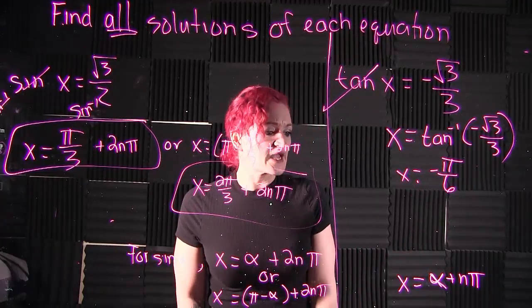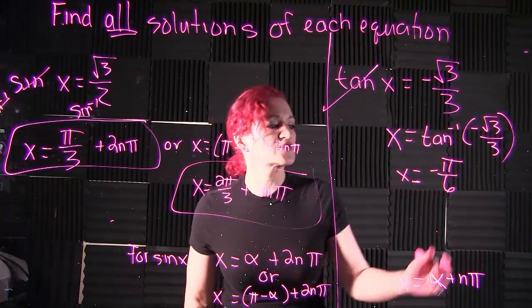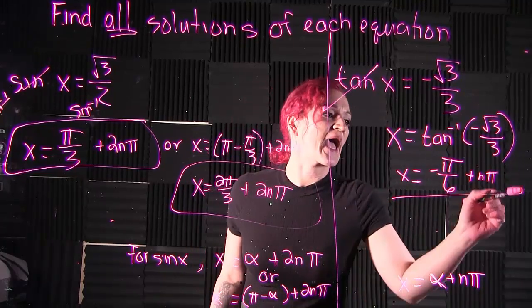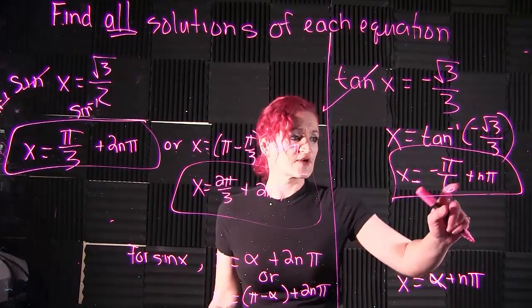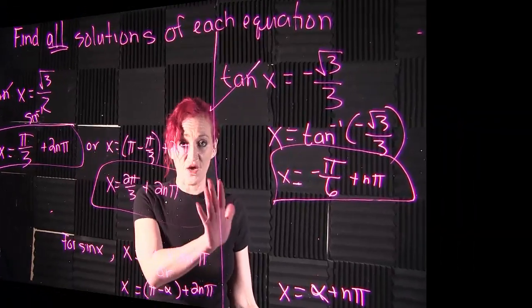Stipulations for tangent is that x equals your alpha, which is our negative π over 6, plus nπ. So this equation, x equals negative π over 6 plus nπ, represents all solutions of this given equation.